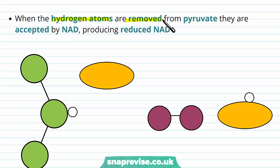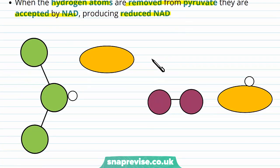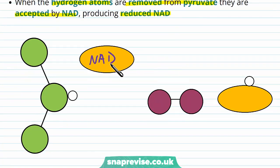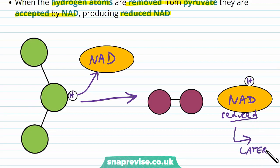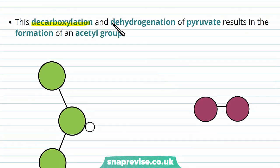When the hydrogen atoms are removed from the pyruvate, they get accepted by NAD, producing more reduced NAD. We saw in glycolysis how NAD can be used to accept hydrogen atoms from molecules in the process of dehydrogenation, and this turns them into reduced NAD. So anytime NAD has a hydrogen, we call it reduced, and this will be used later on in different stages of respiration. Overall, the decarboxylation and the dehydrogenation of pyruvate results in the formation of an acetyl group. An acetyl group has two carbons, and it will be used in the next step of respiration.